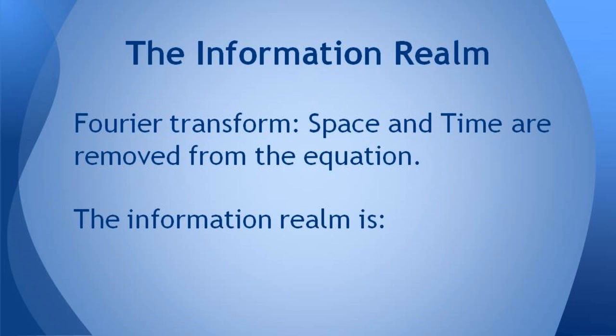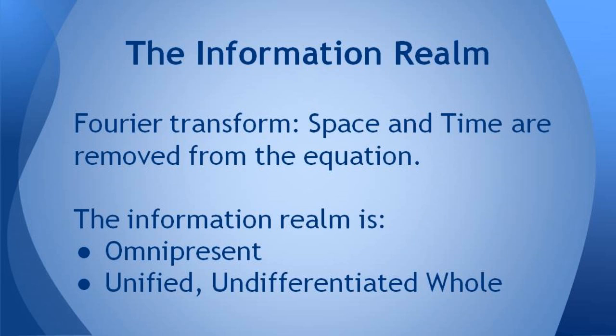A short version of that is that if you remove space and time from the equation by doing some kind of transform like the Fourier transform, you find a realm of information which represents all of physical reality. But since space and time are removed, that realm of information is omnipresent. In other words, there's no relationship to space or time, and so anything that exists in the information realm is present everywhere, or accessible everywhere.